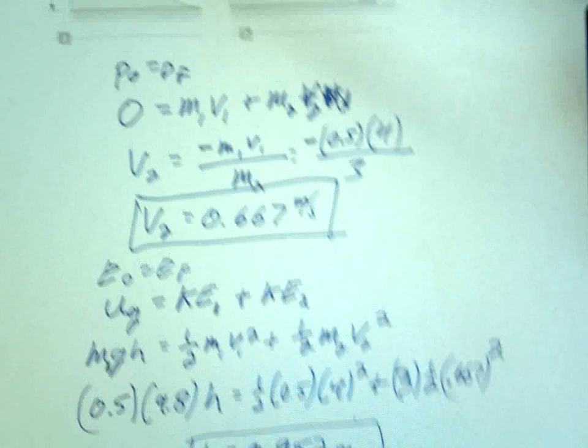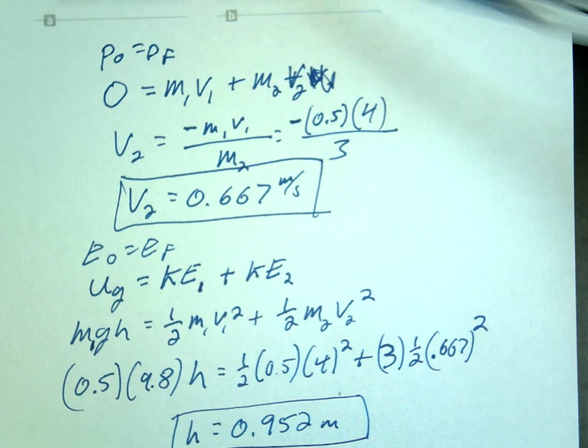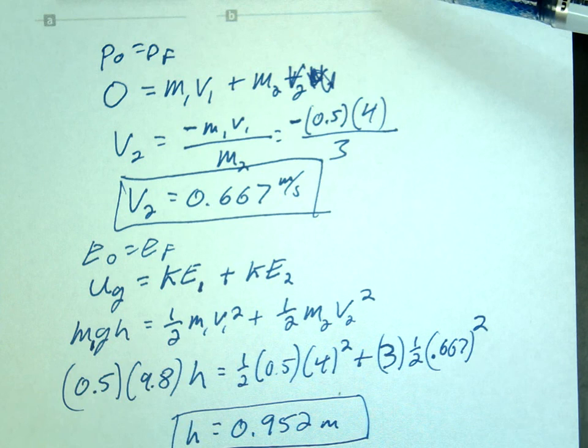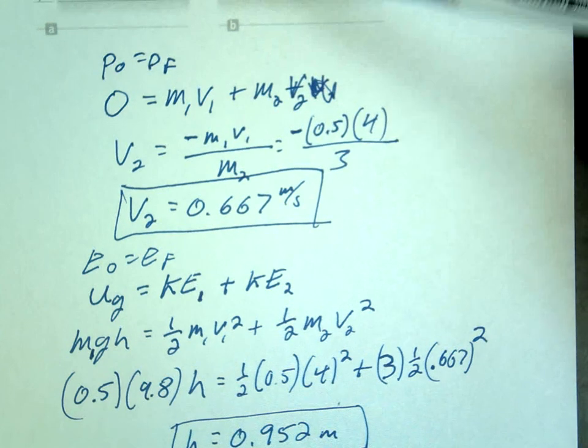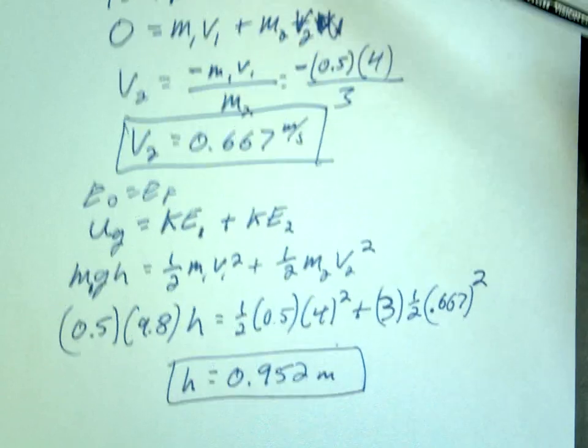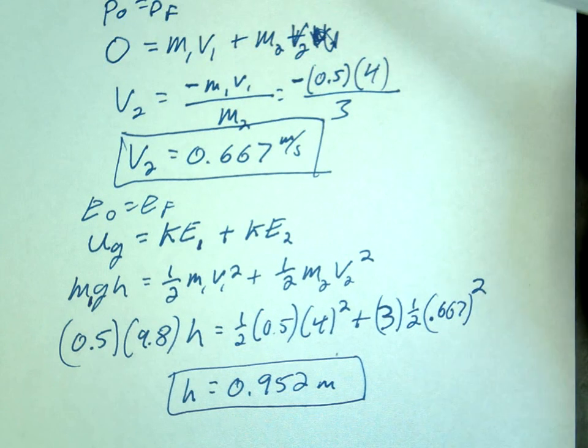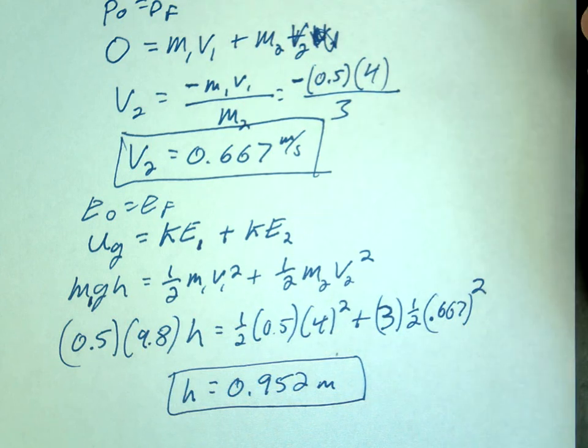Conceptual question. If you forgot this, your velocity is given. What were you getting for a height if you forgot to use this kinetic energy? Was it larger or smaller than this 0.952? Smaller. And that's because there's actually more energy. To get both things to move, you needed to have more energy in order to produce that 4 meters per second.